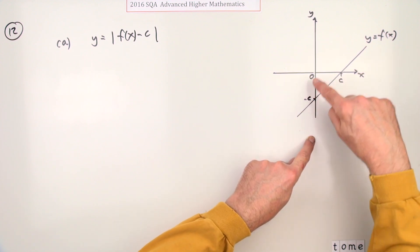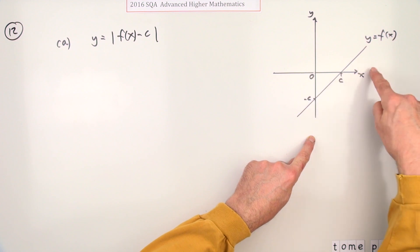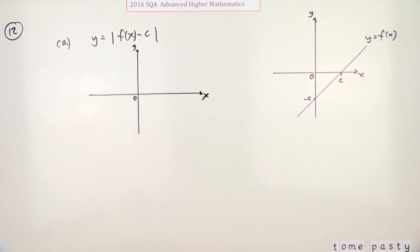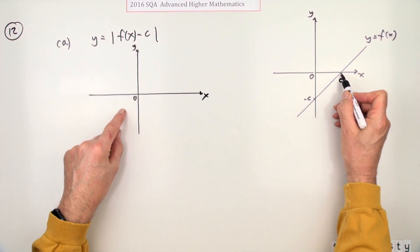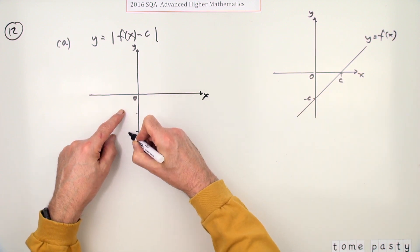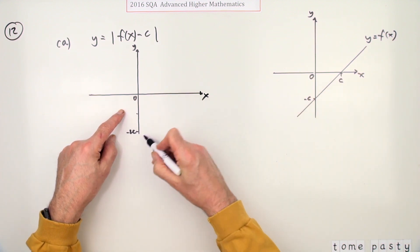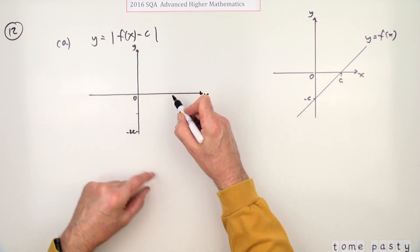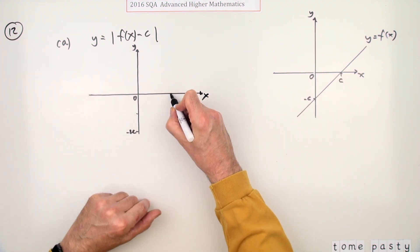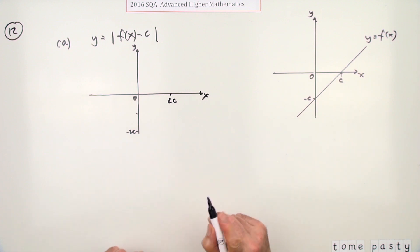And by virtue of the fact that they're the same both sides because the gradient's one, it cuts at 2c here. So that instead of cutting through at negative c, it goes down to negative 2c, which means this will also be 2c along. Make sure the distances are approximately the same or you might lose a mark.